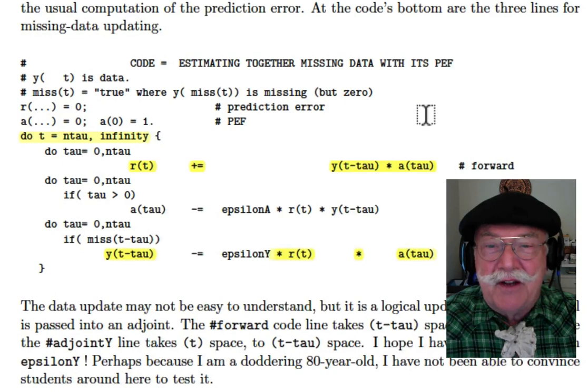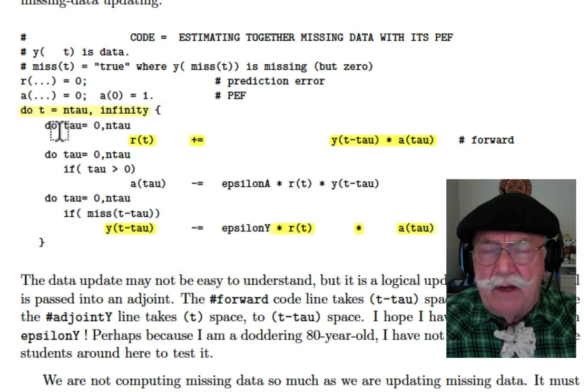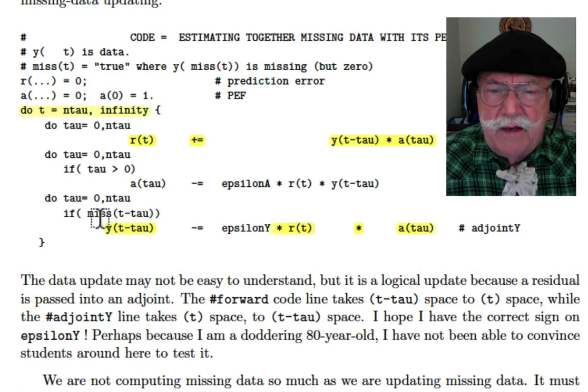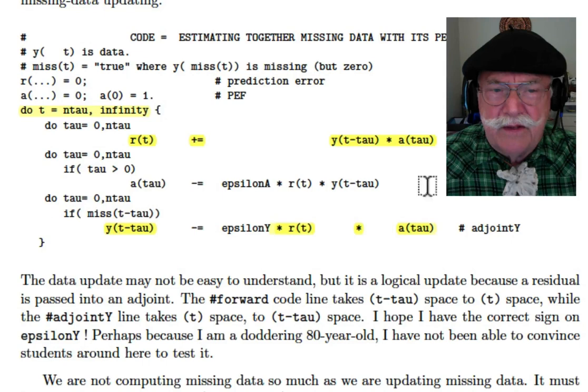So here we have time running to minus infinity to plus infinity. We have a bunch of loops over filters and stuff. And you've already seen this line here. It says the residual is the data being, the lag data being convolved with this filter. You've already seen the update. I did not highlight the update. That's what you saw before. But now we're going to update the data. So if data is missing, only one data is missing, then we are going to update the data that's missing.